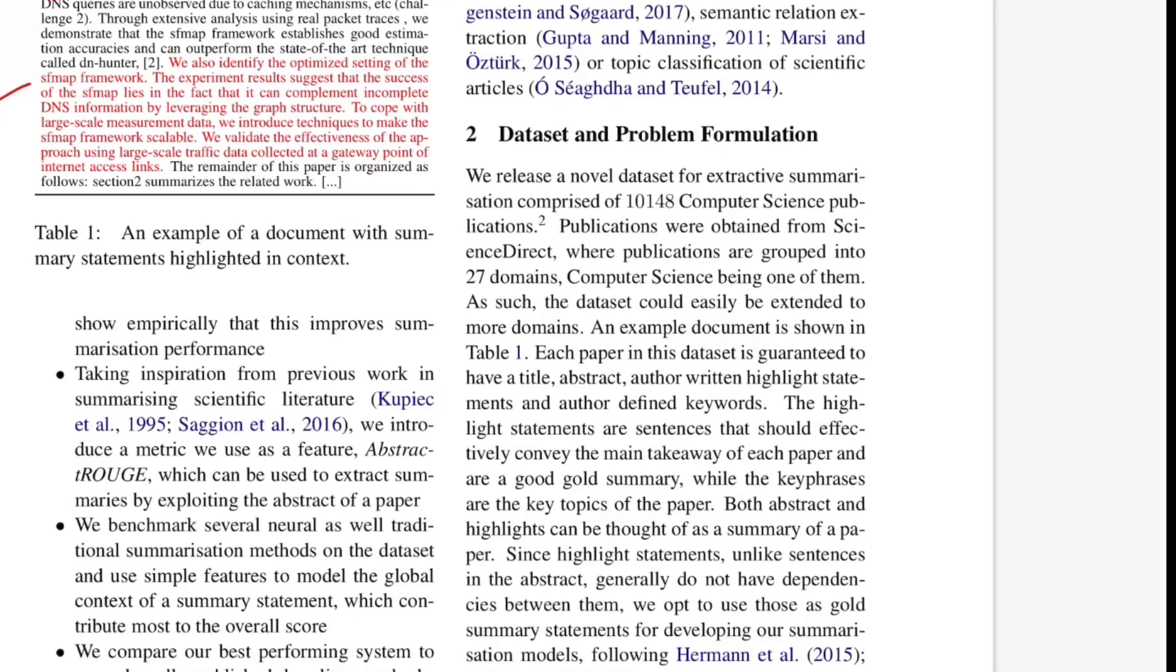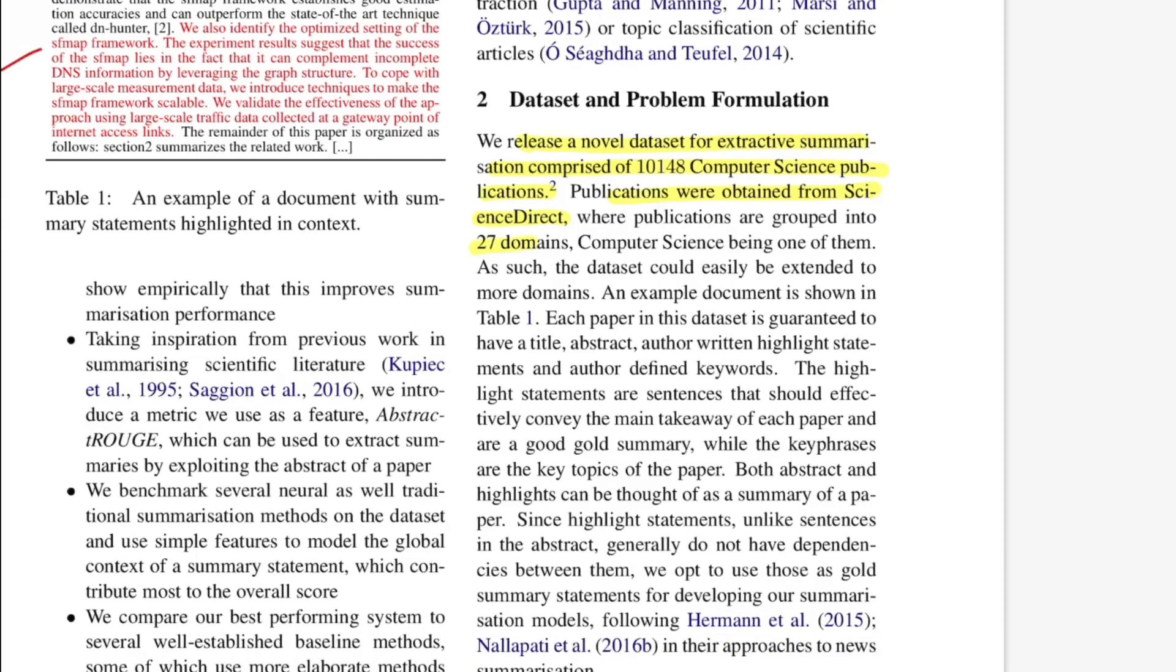They talk about dataset and problem formulation. They release a novel dataset of extractive summarization comprising 10,148 computer science publications. All publications are from ScienceDirect. There were 27 domains but they chose to work on computer science. Each paper will have title, abstract, author-written text which is the ground truth, and author-defined keywords that talk about the main topics in the paper. The highlight statements are sentences that should convey the main takeaways from each paper and are gold summaries.